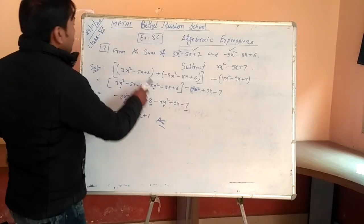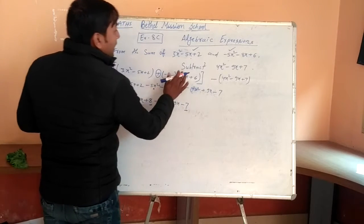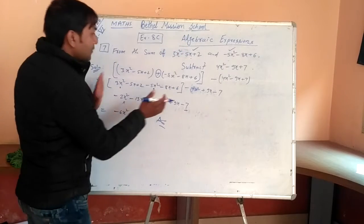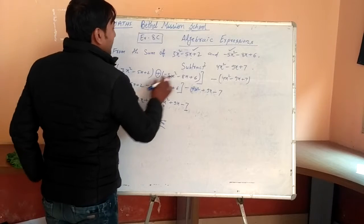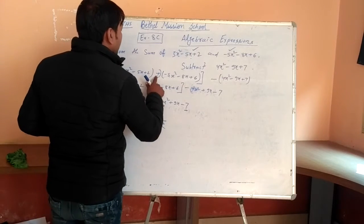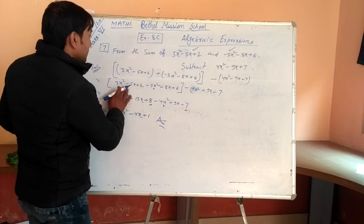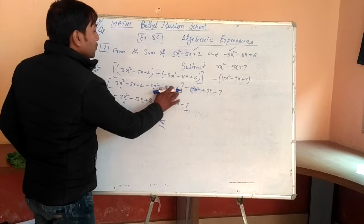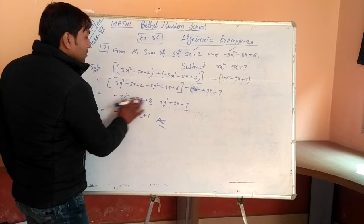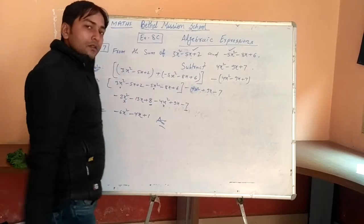Now I explain again. From the sum of this and this — sum means plus. Plus this and this, you have to subtract 4X squared minus 9X plus 7, we have to take it in bracket also. First work: write according to the question. Second work: remove the brackets. Third: you have to solve like terms. X squared and X squared are like terms. X and X are like terms. Constants 2, 6 are like terms. We solved and got the answer, then at last combined the remaining like terms.